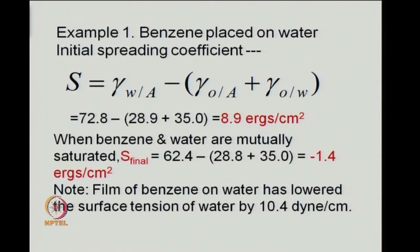To have a quick recap, from this example it was quite clear that when we look at spreading of benzene on water, we get an initial spreading coefficient of about 8.9 ergs per centimeter square, whereas the final spreading coefficient S_final works out to be equal to minus 1.4 ergs per centimeter square.